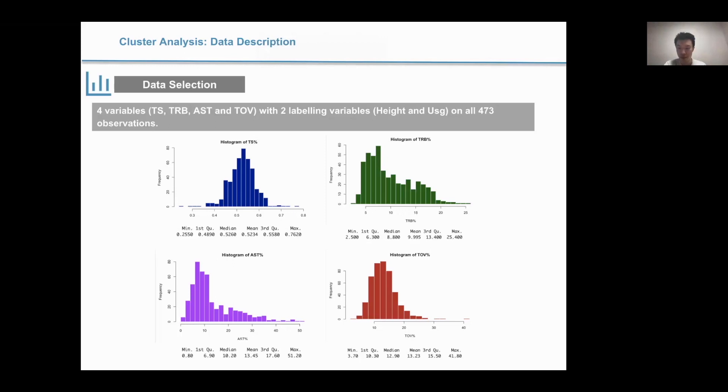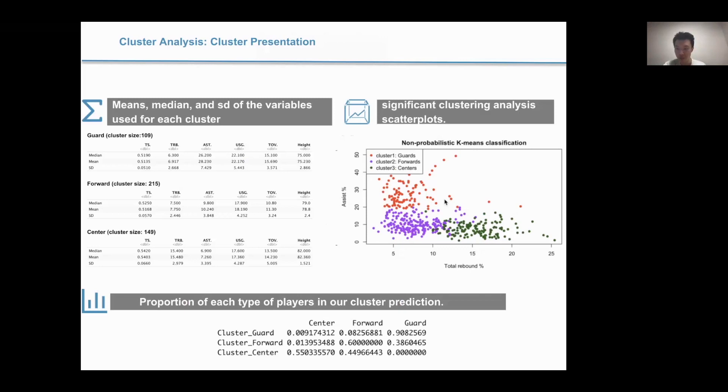Specifically, the best clustering comes from the scatterplot of the assist rate against the total rebound rate, as can be represented over here. It represents the true mean, median, and standard deviation represented on the left-side table. In general, however, our clustering produces a better classification for guards, as opposed to the other two positions. We presume that because in recent years, the task overlap between forwards and centers has become more and more predominant, and it has become incredibly difficult for us to differentiate between these two positions, only by looking at the game stats.